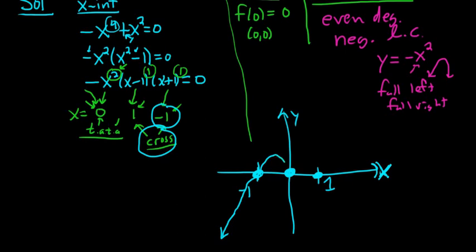It comes back down really slowly. And then at 0, ta-ta, touches and turns around. So it comes back up. And then at 1, it crosses down. And it falls right. That is the answer.